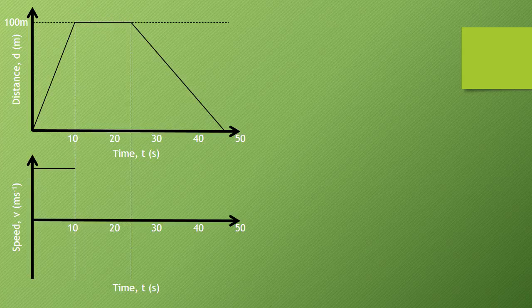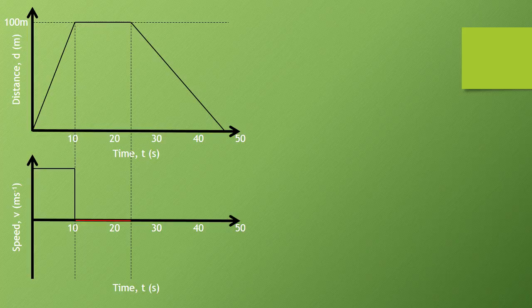For this middle section when he was stationary, the speed was zero. So we show that by putting a line right on our axis there where it matches up with the zero speed point.